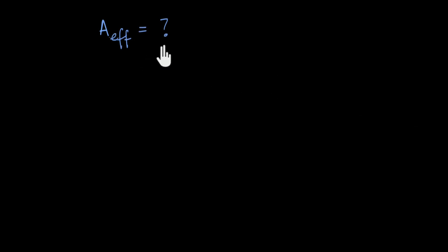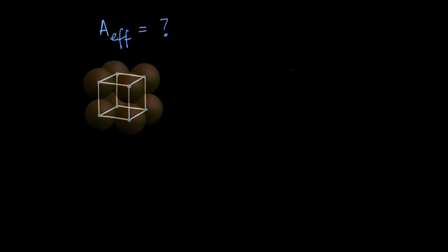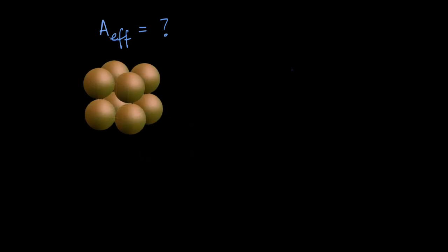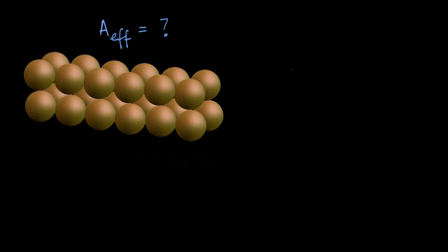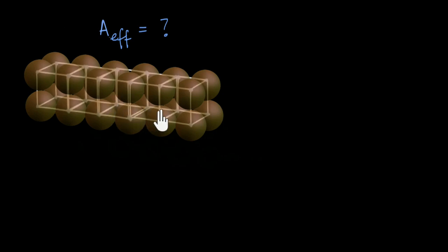To understand what A_effective means, let us take the help of a simple cubic unit cell. If we replace the lattice points with the motif — which in the case of metals is a single atom — we get a unit crystal. Remember that lattice points represent the center of an atom by convention. Now crystals are not made of a single unit cell but of many unit cells. Looking closely at the atoms at the corners, we realize these atoms do not belong exclusively to a single unit cell but are shared between different unit cells.